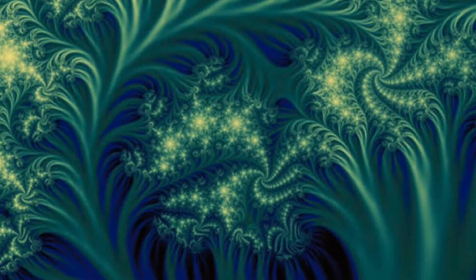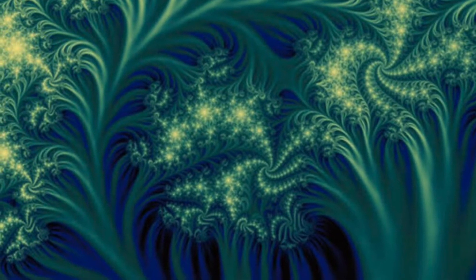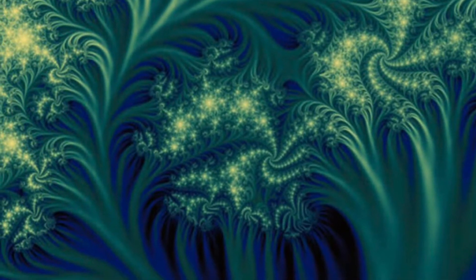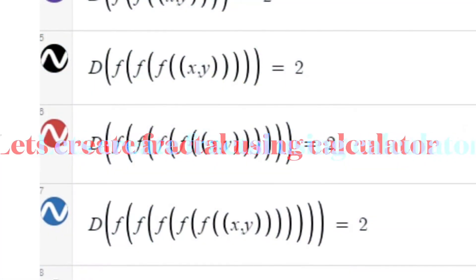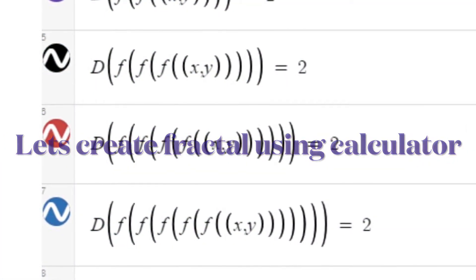For example, in some vegetables, in some mollusks like snails. These are all patterns which are called fractals. I am going to tell you how to draw a fractal using a Desmos calculator.